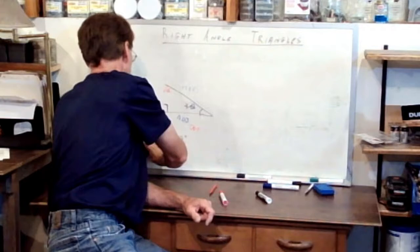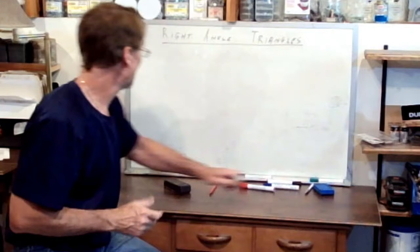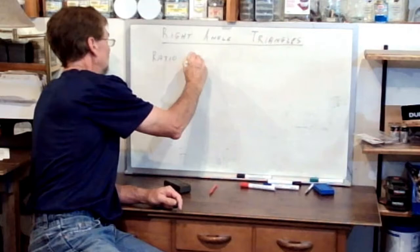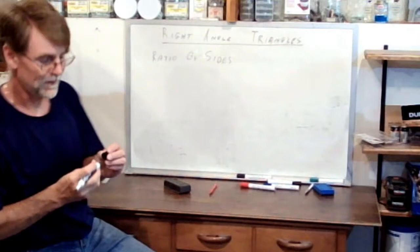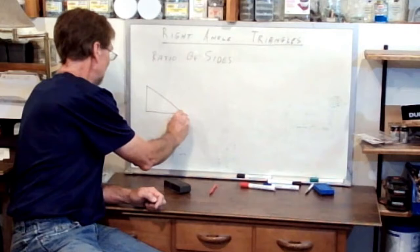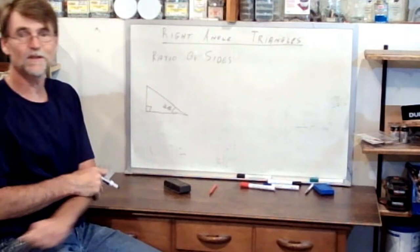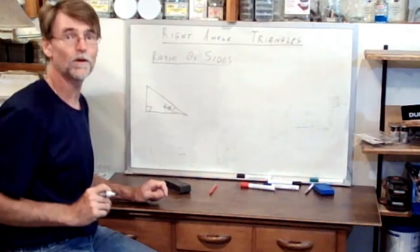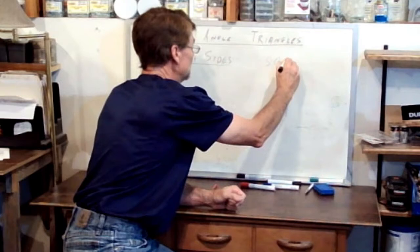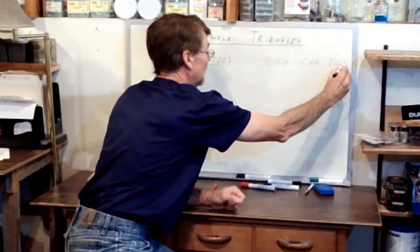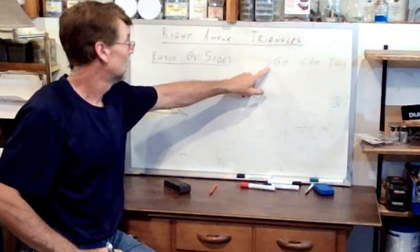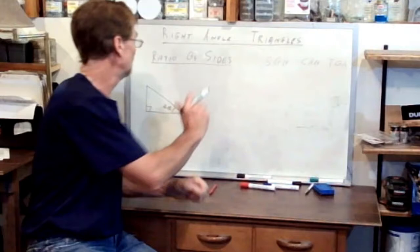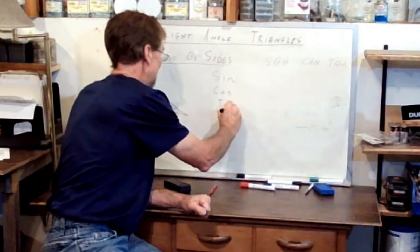Now that you're done writing all that down, we can carry on. The next thing we need to talk about is what's referred to as the ratio of sides. There's a particular relationship for all right angle triangles, and to remember how this works, we use the term SOHCAHTOA. To determine the ratio of sides, we use functions called sine, cos, and tan.